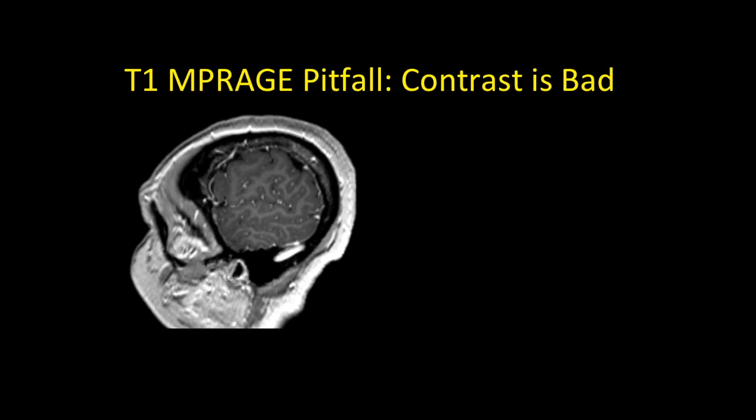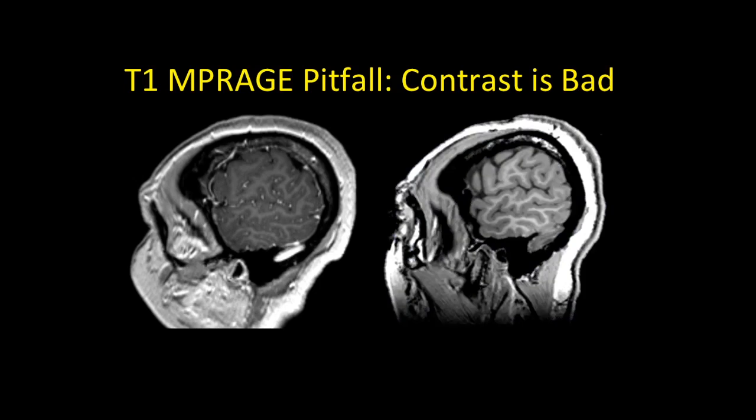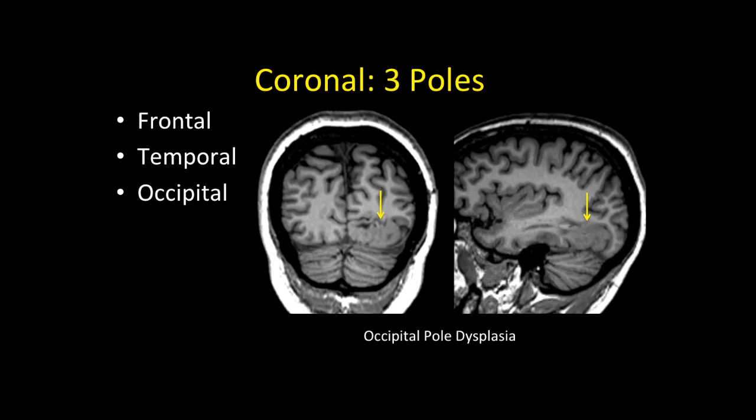A key T1 MP-rage pitfall: contrast is bad. Do not waste time acquiring or looking at post-contrast T1 MP-rage. The contrast is not optimized for finding cortical lesions, and enhancement in pial blood vessels often masks subtle lesions. As shown here, you cannot see the lesion on the post-contrast image, but on a regular non-contrast MP-rage you can easily see the subtle microgyria. Just say no to gadolinium — if post-contrast T1 is needed in your protocol, use a regular spin-echo 2D T1.